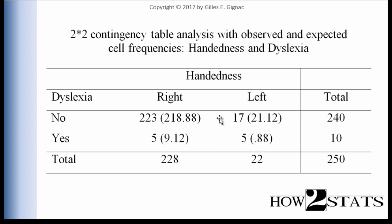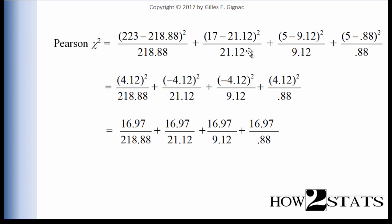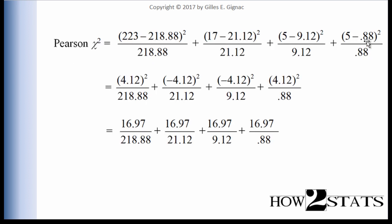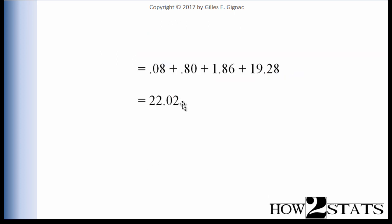When we sum the difference between the observed and expected cell frequencies across all four key cells, we get a chi-square value of 22.02. This is the Pearson Chi-Square computed from all four observed and expected cell frequencies. It may deviate slightly from a statistical program due to rounding differences — I only calculate to two or three decimal places — but you will get something very close to 22.02.